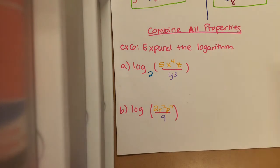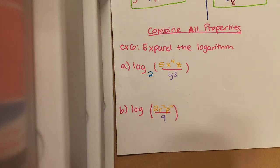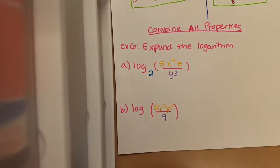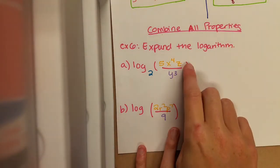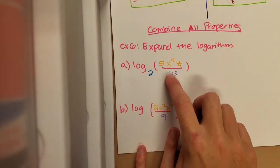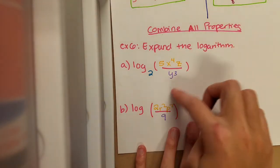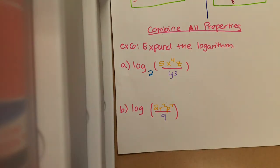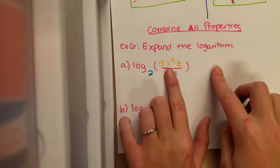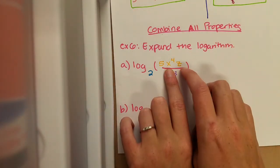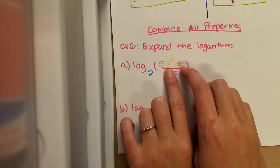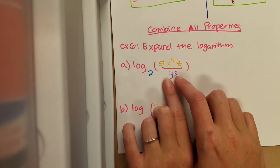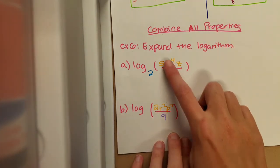We're starting out with one and we want to see multiple logs. We are not solving the log, we're just expanding it. So the first thing I'm going to do, I'm going to count all the pieces in my division symbol and that will tell me how many logs I'm going to have. So in the numerator I have one, two, three pieces and in the denominator I have a single piece.